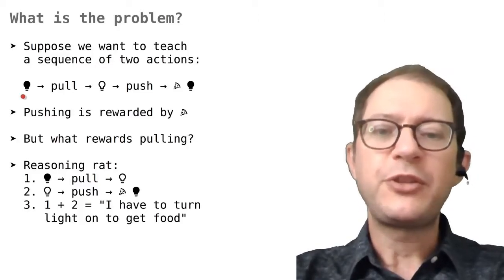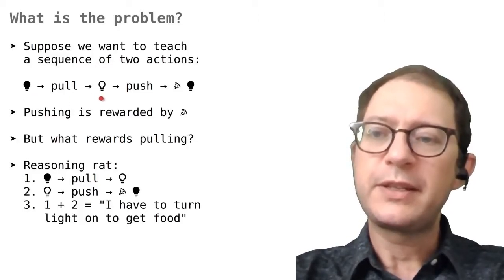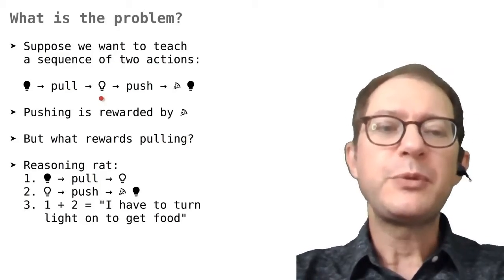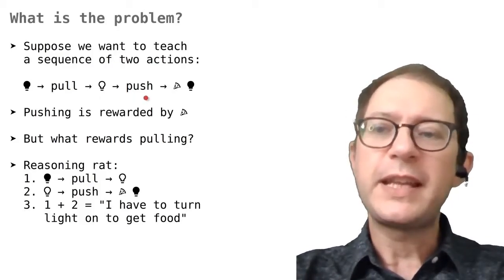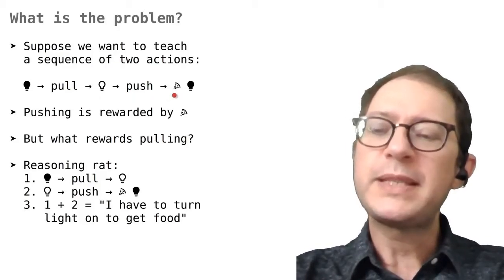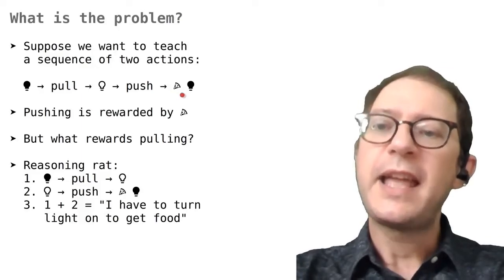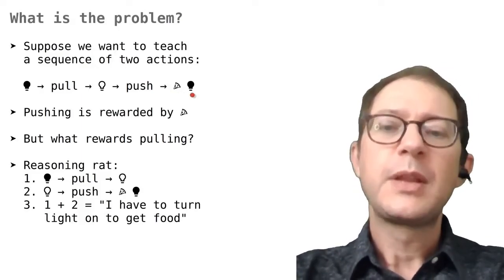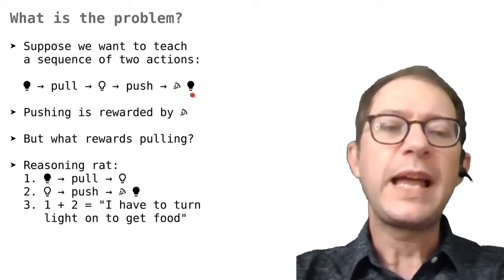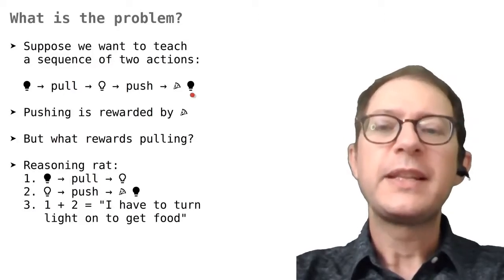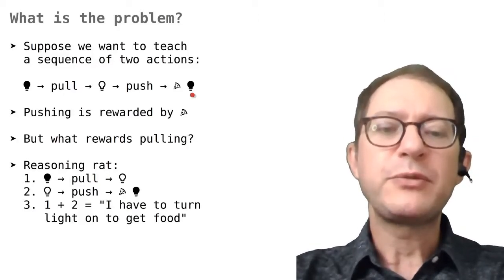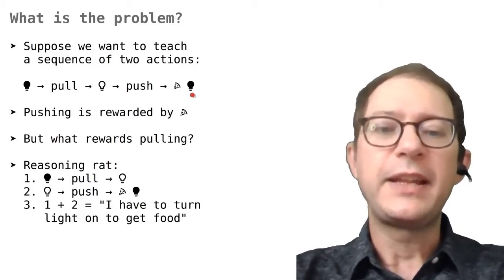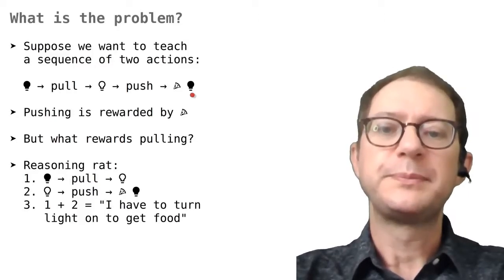If it pulls the chain, the light goes on. At this point, if it pushes the lever, it gets food — our usual pizza slice — and the light turns back off. Pushing when the light is off does not work. The rat has to first turn the light on and then push the lever to get food.